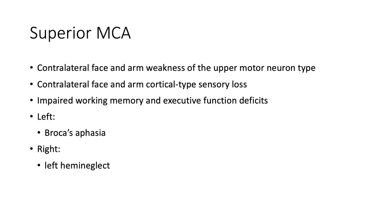Infarcts in the superior division cause contralateral face and arm weakness of upper motor neuron type, and sometimes contralateral face and arm cortical-type sensory loss. Also impaired working memory and executive dysfunction. Infarcts on the left side result in non-fluent or Broca's aphasia, whereas right-sided infarcts result in left hemi-neglect to a variable extent.